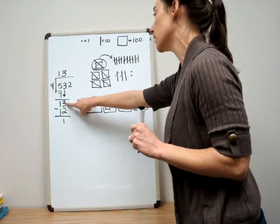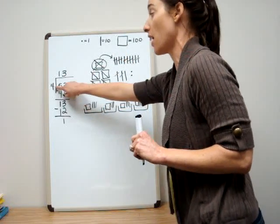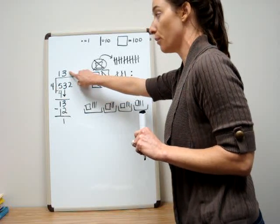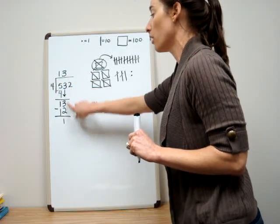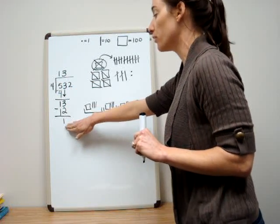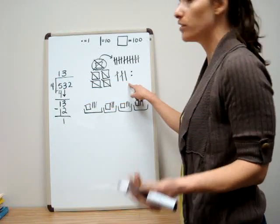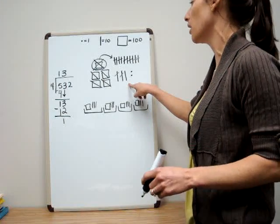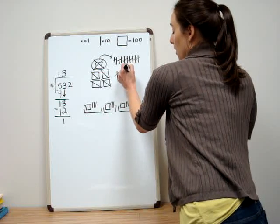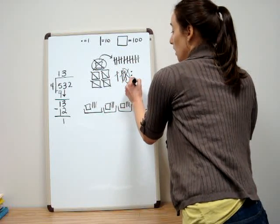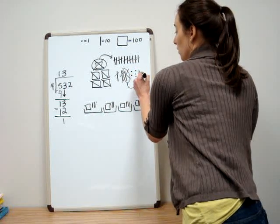That's what my base ten blocks have modeled — I have thirteen tens, and when I divided them into four groups, there were three in each group. I used up twelve and subtracted that off, leaving me with one ten. That one is in my tens column. And that one ten isn't doing me any good in the format it's in, so I'm going to cash it in for ten ones.